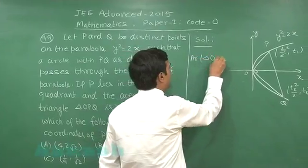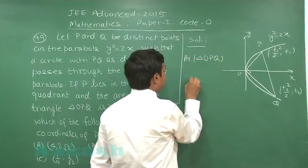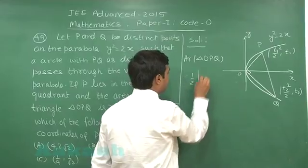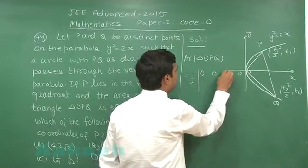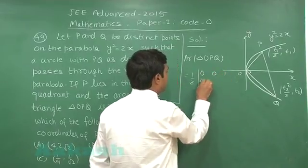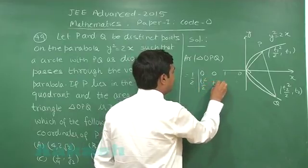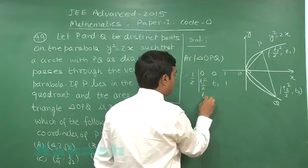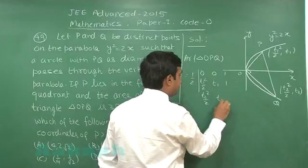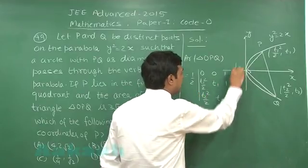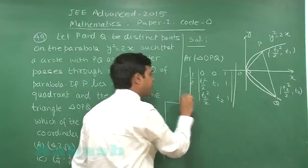Area of triangle OPQ, this is half 0 0 1, t1 square by 2, t1 1, t2 square by 2, t2 1 and the modulus of the entire term.